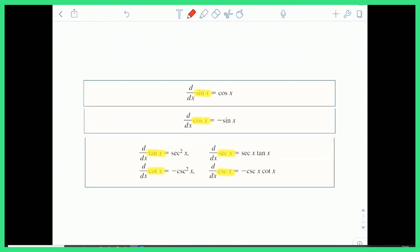And here they are. The derivative of sine x is cosine x, the derivative of cosine x is negative sine x, the derivative of tan x is secant squared x, and cotan x is negative cosecant squared x, the derivative of secant x is secant x tan x, and the derivative of cosecant x is negative cosecant x cotan x.